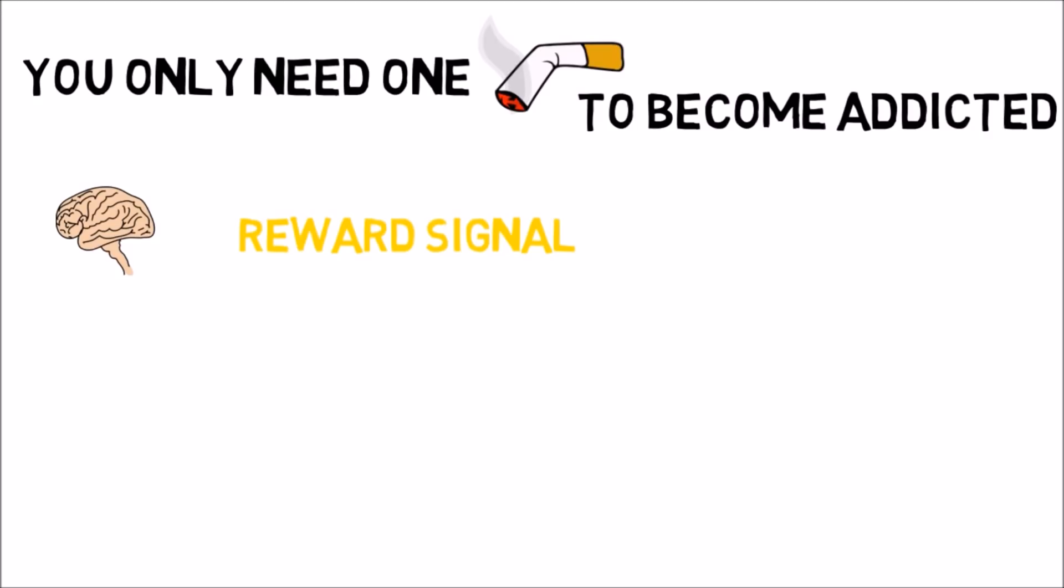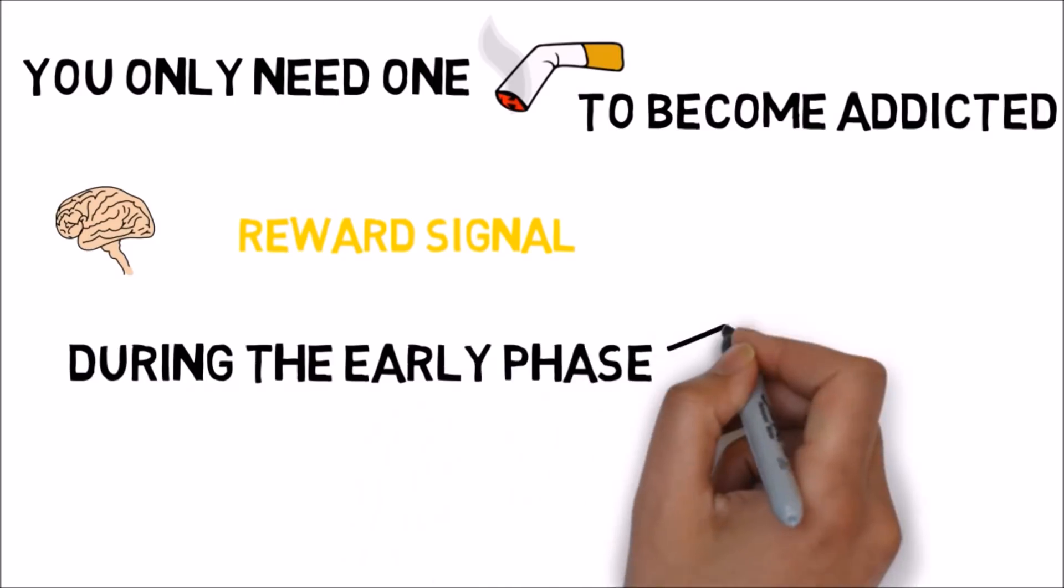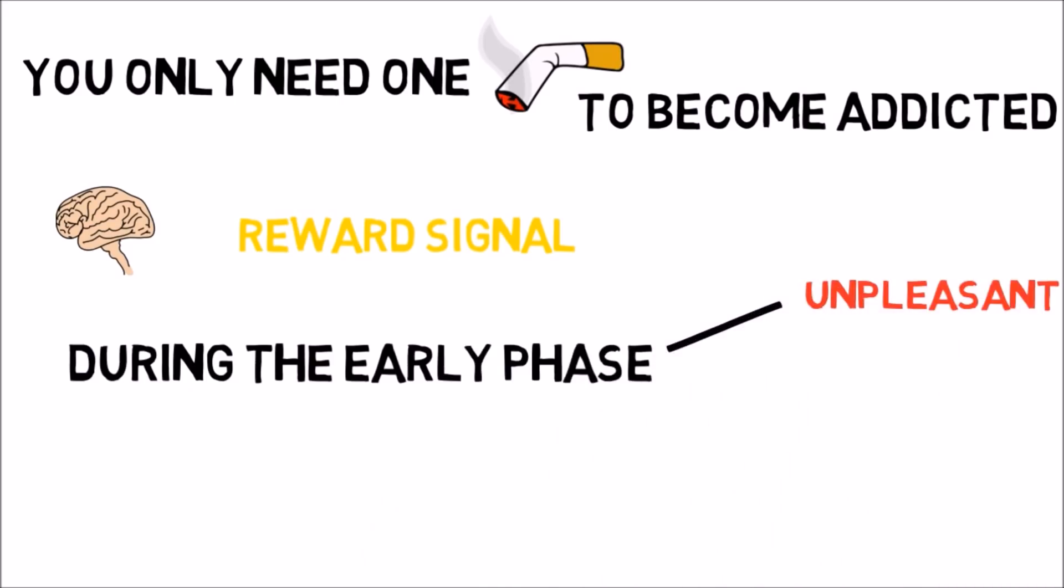The researchers who published their findings in the Journal of Neuroscience found that it could be manipulated to trigger either satisfying or unpleasant feelings. Stephen Lavulet from the University of Western Ontario who led the study said, during the early phase of tobacco exposure, many individuals find nicotine highly unpleasant and aversive, whereas others may become rapidly dependent on nicotine and find it highly rewarding.